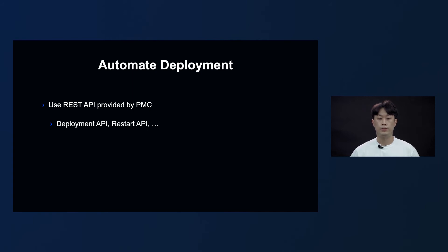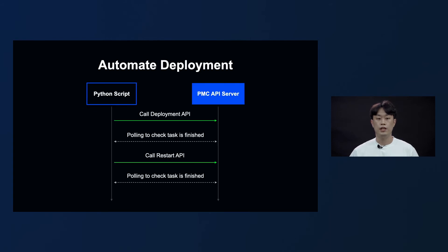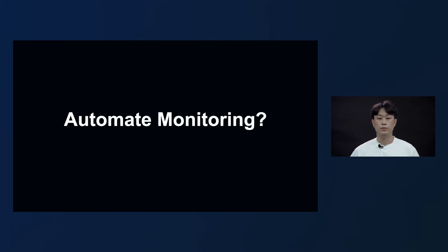Next is about automating deployment. PMC provides UI and REST API, so we were able to easily automate using this. First, we called the deployment API and checked if the task is finished by polling. You can also call the status of the task using the PMC API. If deployment is completed, we call the restart API and regularly check for completion. Sharing and deployment was easy to automate. However, monitoring is quite abstract and there are many variables, so it was tricky to automate.